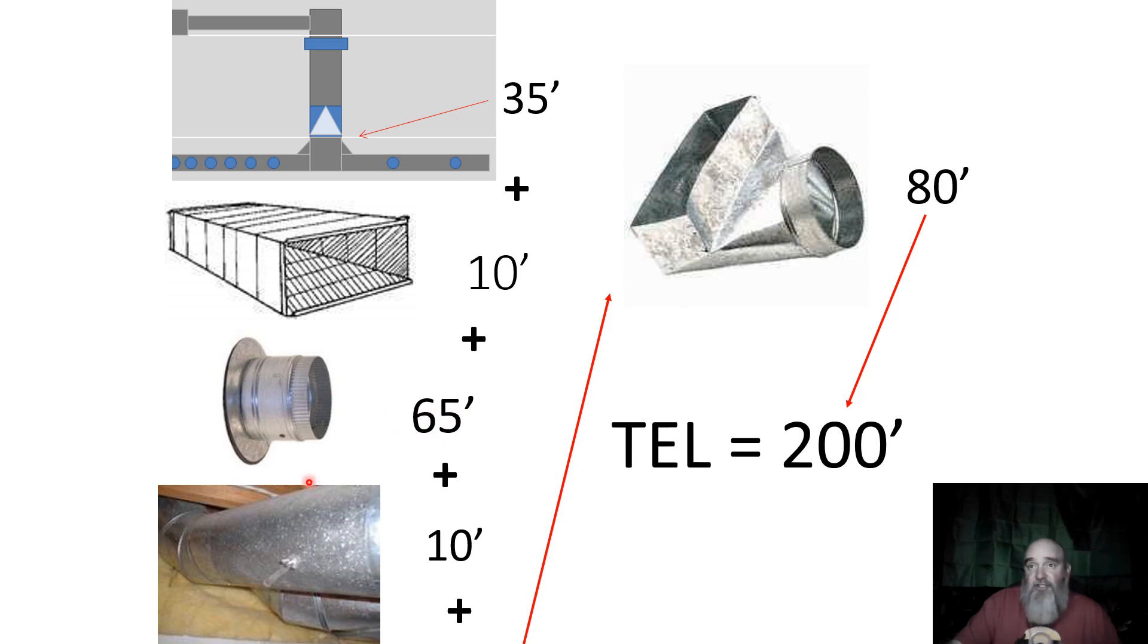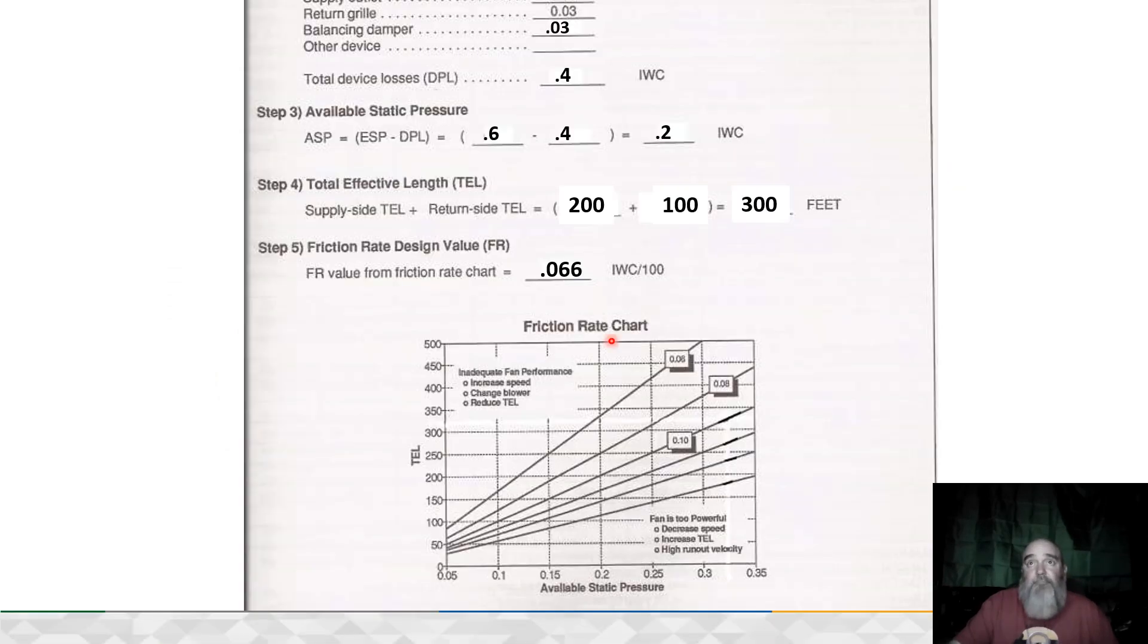This fitting—its effective length is 35 feet. The trunk itself is 10 feet long. Where this branch run comes off has an effective length value of 65. All totaled up on the supply right here, we have 200 feet in TEL.